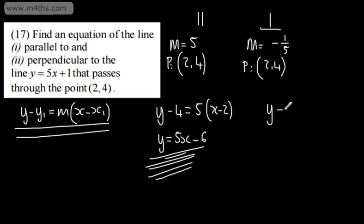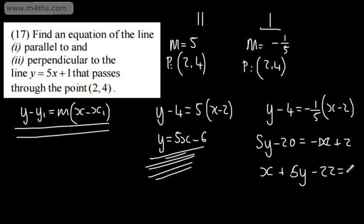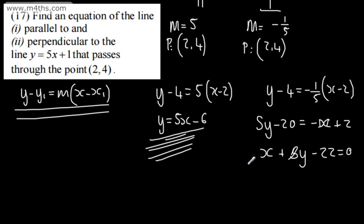For the perpendicular line: y minus 4 = negative one fifth times (x minus 2). Writing this in the form ax + by + c = 0, multiplying through by 5: 5y minus 20 = negative x + 2. Rearranging gives x + 5y minus 22 = 0.